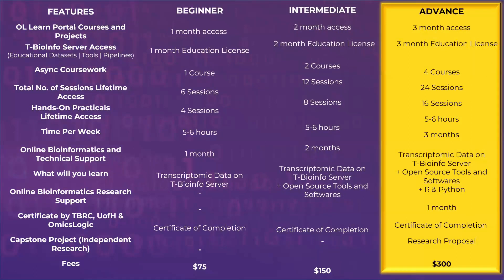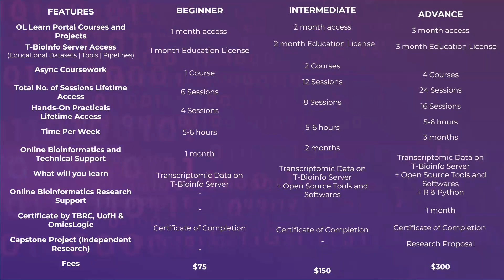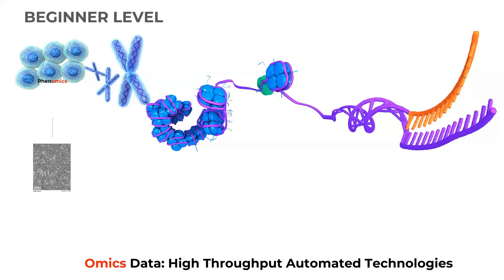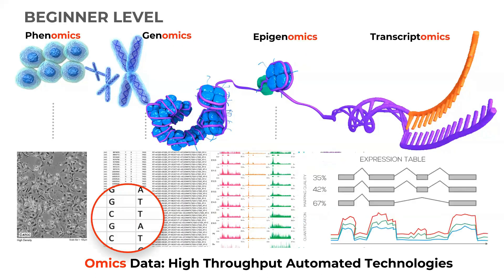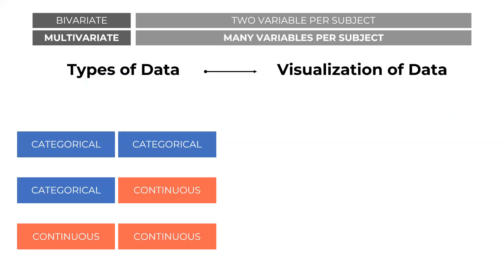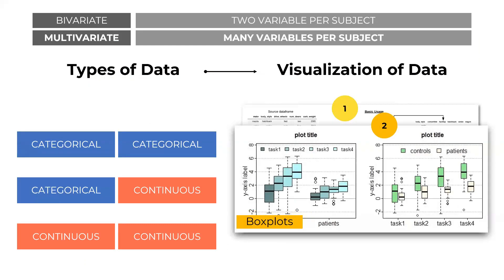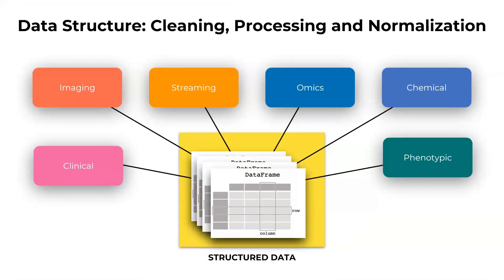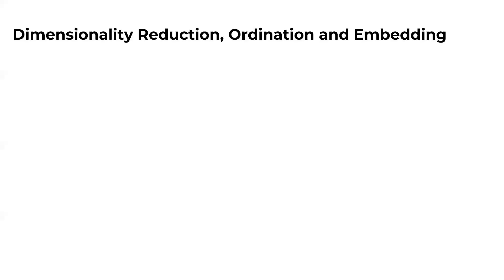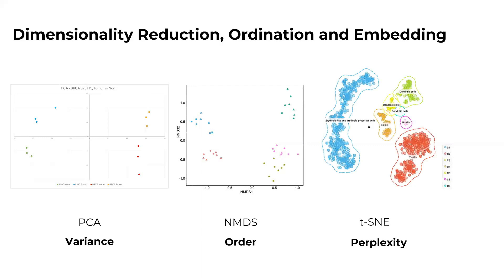The beginner level training program serves as a solid foundation in Python programming and its applications to biomedical data science. You'll start by understanding the basics such as data types, variables, control structures, functions, and modules. Then you'll dive into data processing and cleaning using powerful libraries like NumPy and Pandas. Armed with these skills, you'll move on to exploratory data analysis, leveraging visualization libraries like Matplotlib and Seaborn to uncover patterns and relationships hidden within your data.